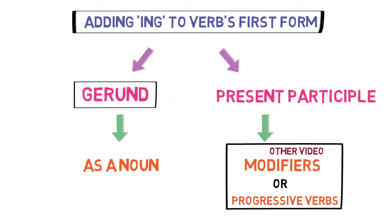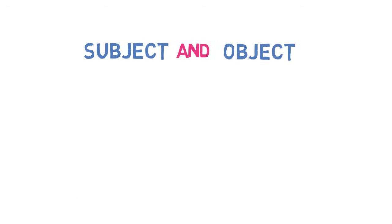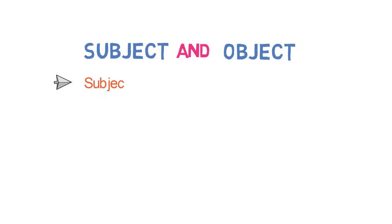Let's understand about gerund now. In our discussion about subject and object video, we have discussed that in any sentence, subject can either be a noun or pronoun.